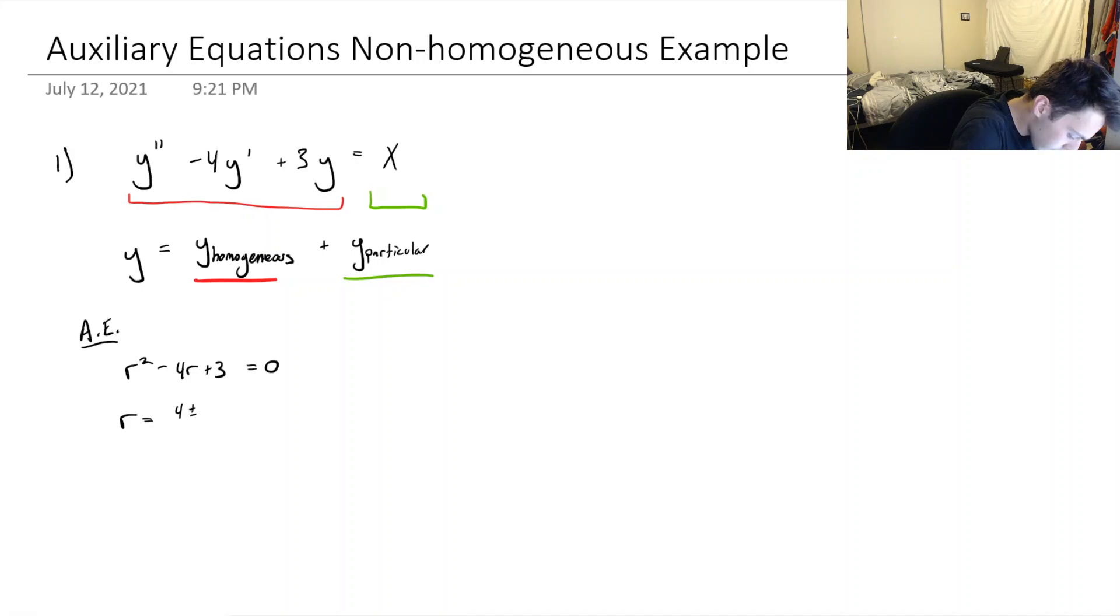that's 4 plus or minus square root of B squared is 16 minus 4AC all over 2 times 1. So this is 4 plus or minus 16 minus 12 is 4. This is going to be 2.